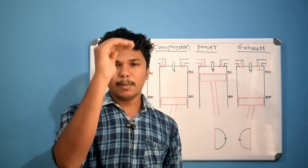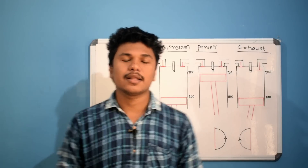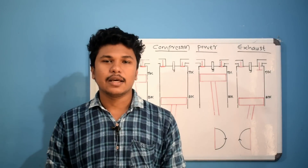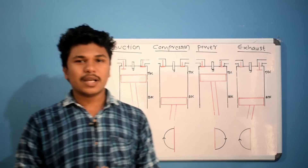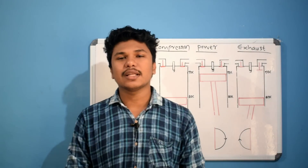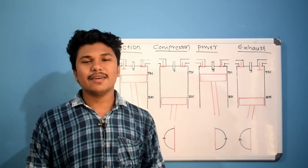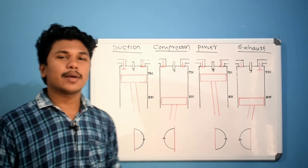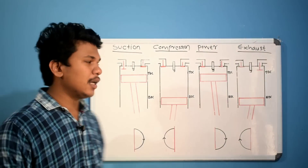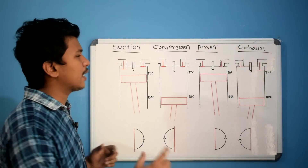In a 4-stroke engine, you'll have 4 strokes. If you have a working cycle, you'll have 4 strokes. If you have those 4 strokes, you'll have a complete working cycle.